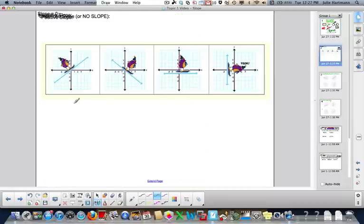Now let's look at four different slopes we can have. We can have this is going up. That is a positive slope. We have a positive rise and a positive run.